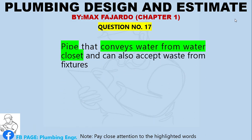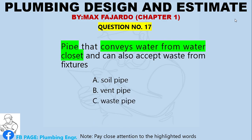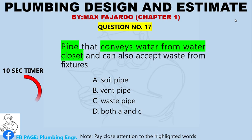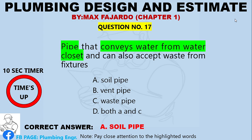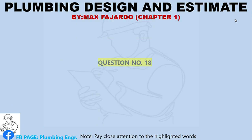Question Number 17. Pipe that conveys waste from the water closet and can also accept waste from fixtures. A. Soil pipe. B. Vent pipe. C. Waste pipe. D. Both A and C.